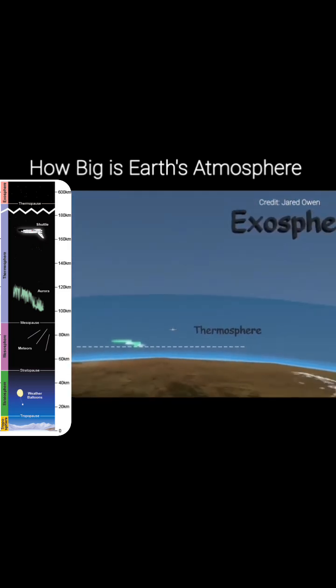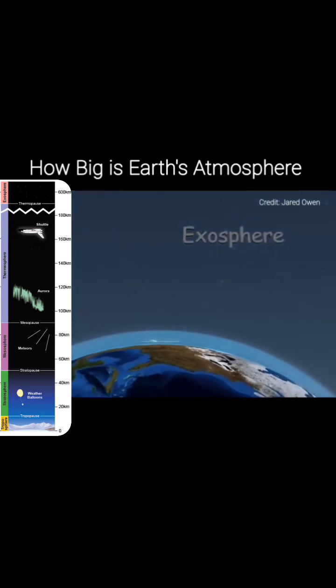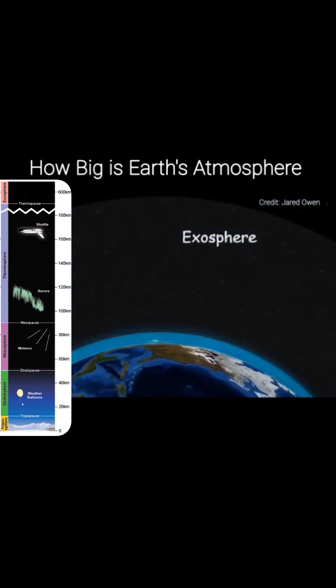The highest layer is the exosphere. This is the layer that merges with the vacuum of space. There are so few air molecules up here that they will rarely collide with each other.